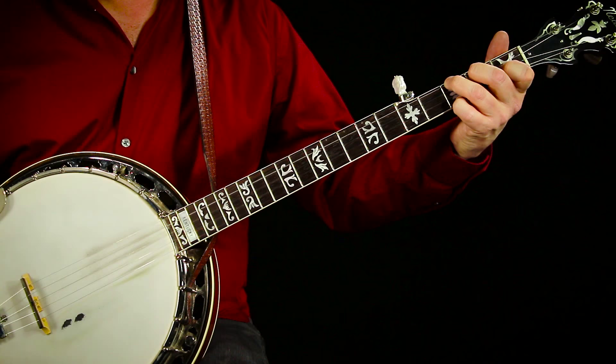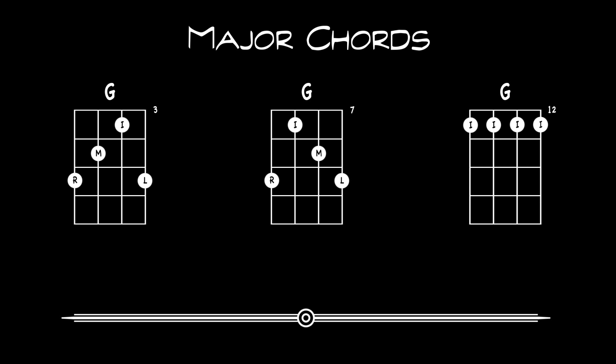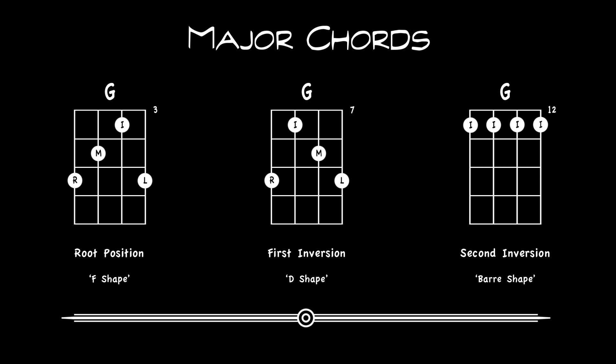Many of you are no doubt familiar with these three chord shapes. These are commonly referred to as the F shape, D shape, and bar shape. A less banjo-centric nomenclature for the same positions is root, first inversion, and second inversion. It doesn't really matter what you call them, but it will be helpful to understand how they're related.